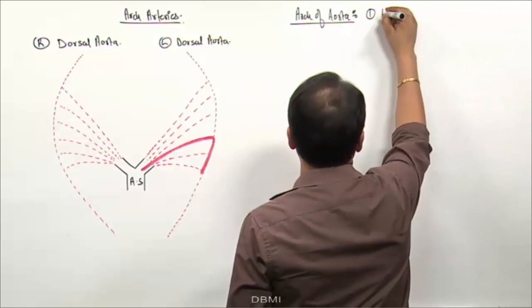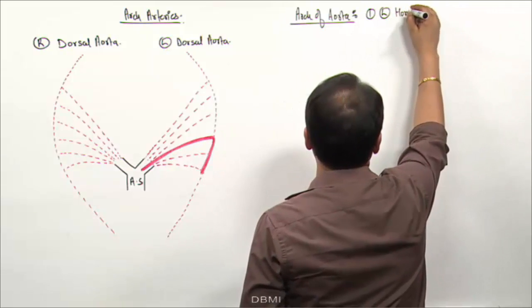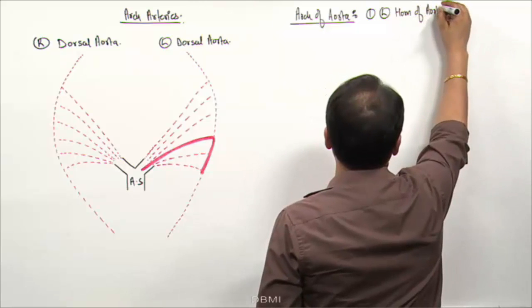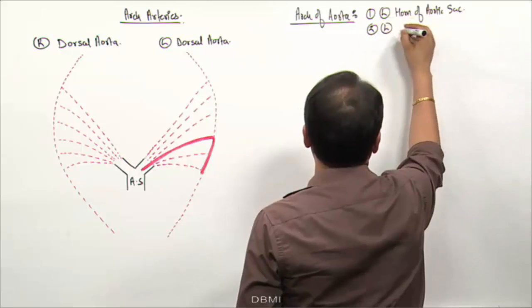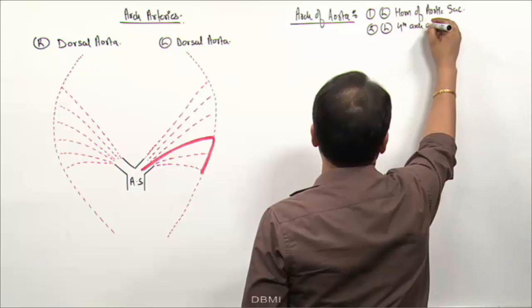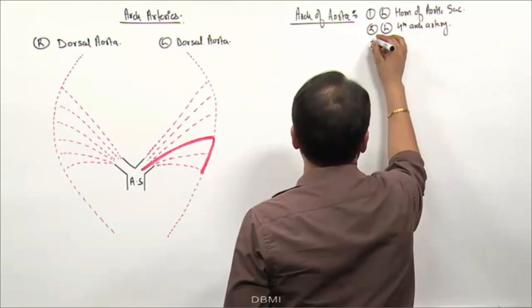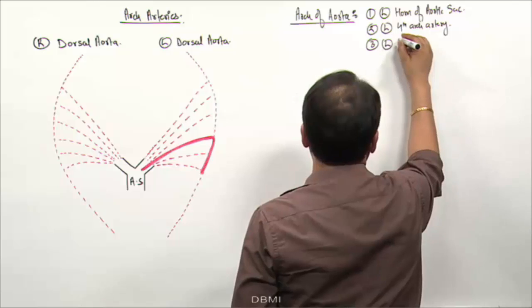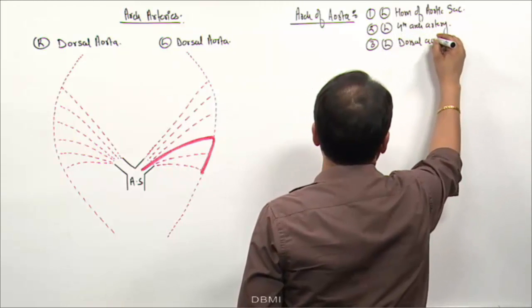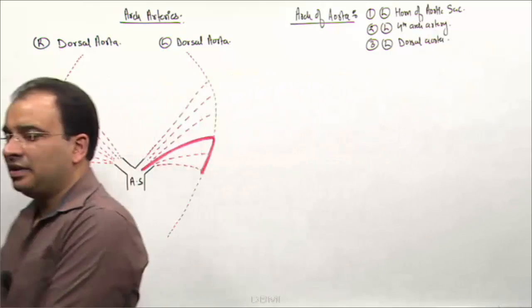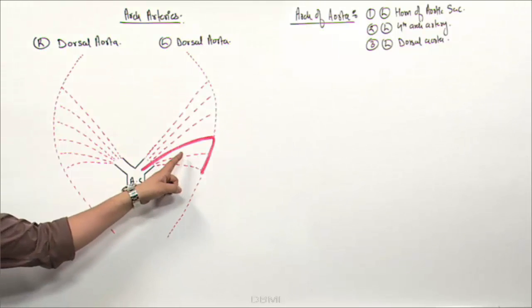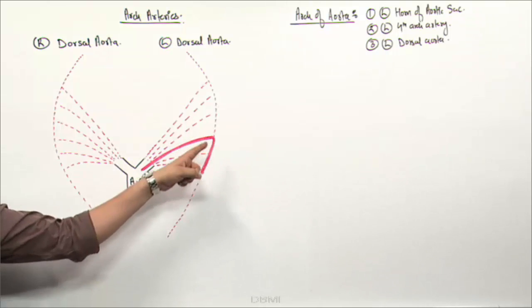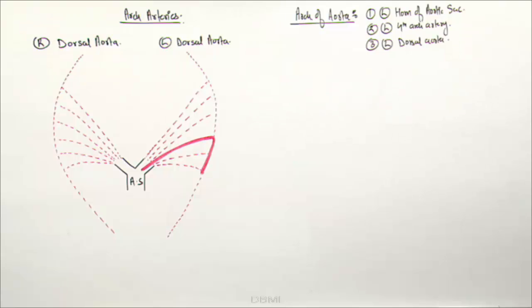The developmental components of the arch of aorta are: left horn of aortic sac, left fourth arch artery, and the left dorsal aorta. If a question is on the arch of aorta, you say it is from the left horn of aortic sac, the left fourth arch artery, and the portion of the left dorsal aorta.